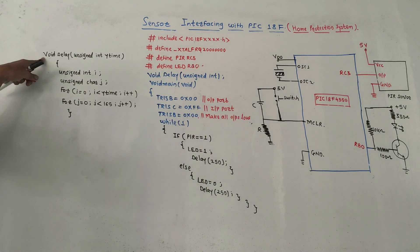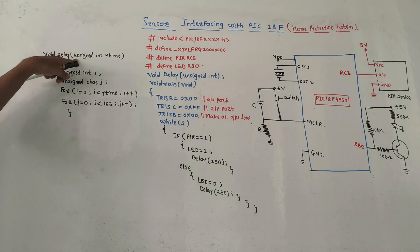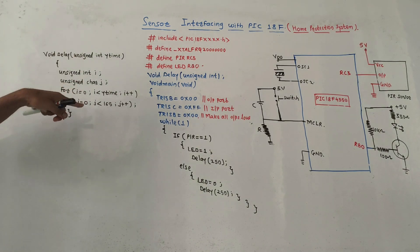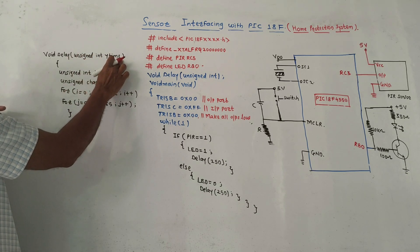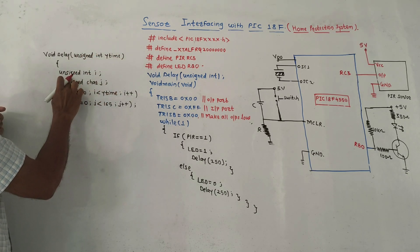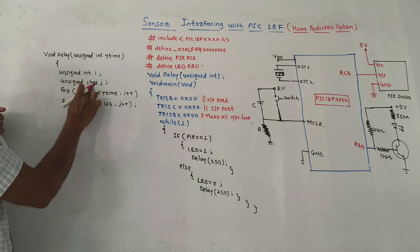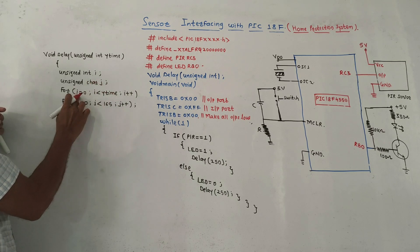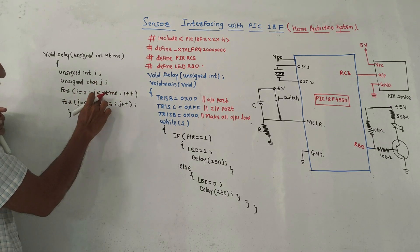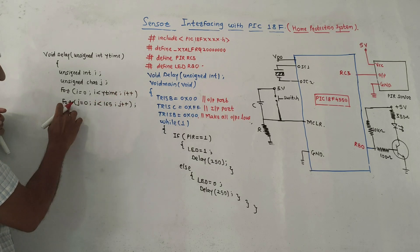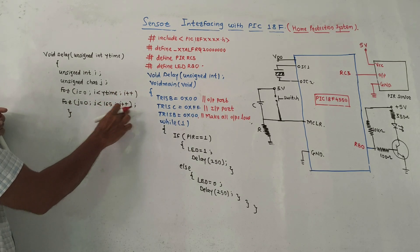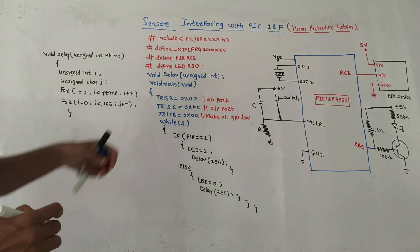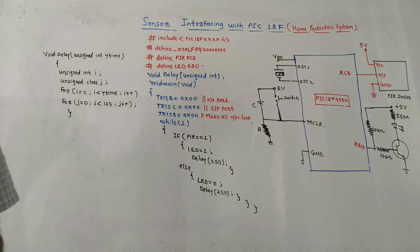This is the standard delay function which we have already discussed in earlier videos. The function is: void delay with unsigned integer y_time, with unsigned integer i and unsigned char j. A loop runs for i from 0 while i is less than y_time, incrementing i, and inside it j runs from 0 while j is less than 165, incrementing j. This provides the required delay.